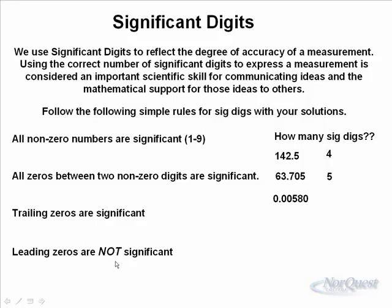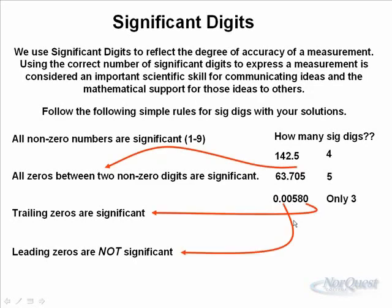This next one, 0.000580, trailing zeros are significant. The trailing zero at the end of the eight is considered significant. Because we have the five and the eight, and this zero, that's three significant digits. Leading zeros are not significant. These three zeros out in front of the five are considered leading zeros. Really what they're doing is just moving the decimal place, and they can be considered not significant. So this number, even though there are six digits, only three of them are considered significant.